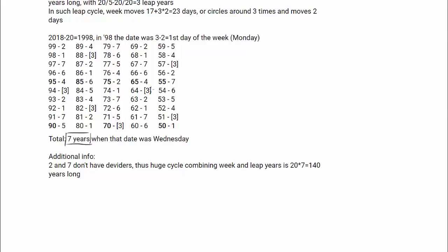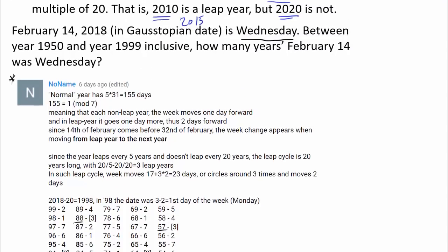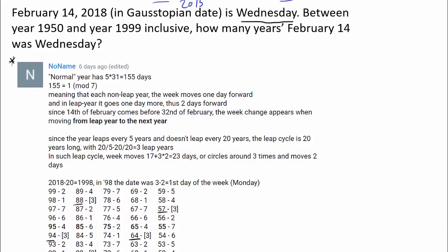And we are about to find out — the answer that No Name gave is perfect. We are going to find that 1951, 1957, 1964, 1970, 1982, 1988, and 1994 are indeed the years on which February 14th was a Wednesday, just like 2018.